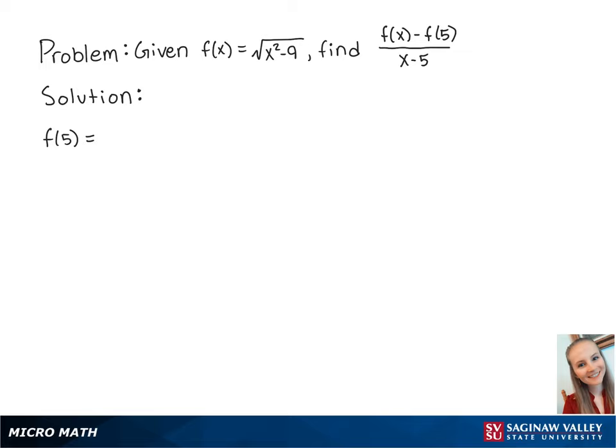For this problem, we have the function f of x equals the square root of x squared minus 9, and we're going to find the difference quotient f of x minus f of 5 over x minus 5.